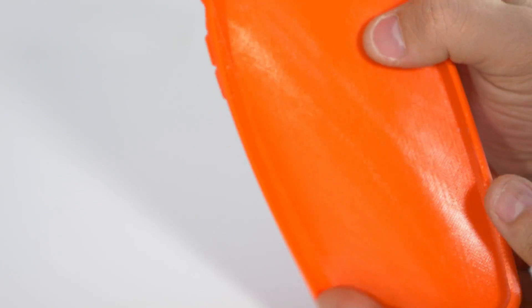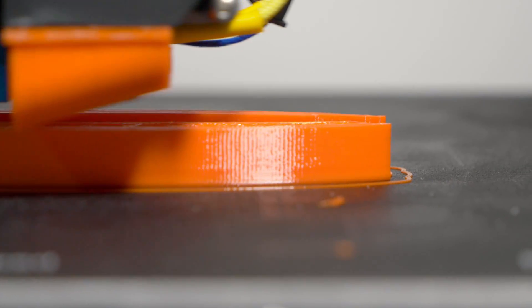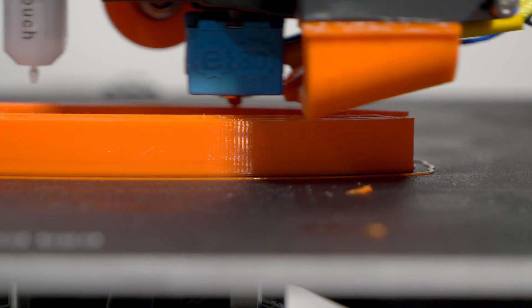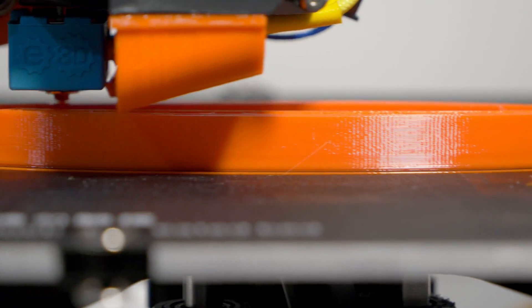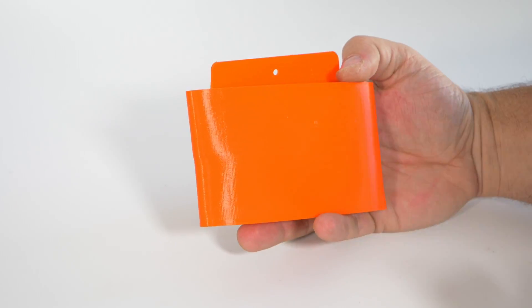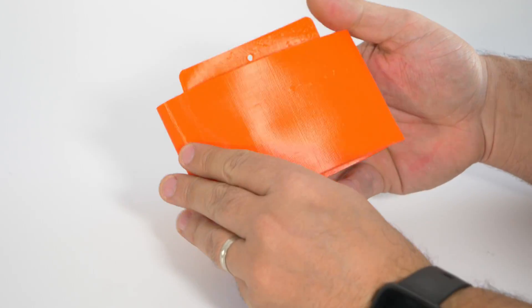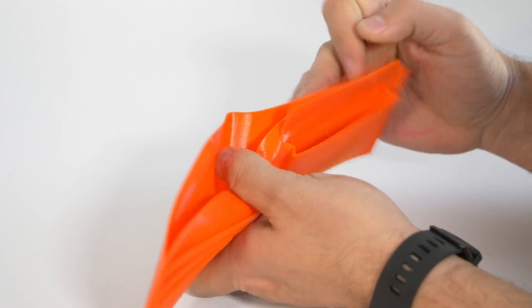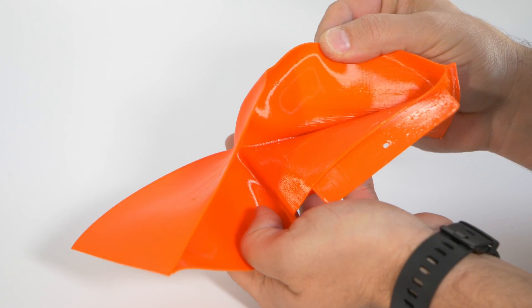But I went ahead and downloaded the wallet STL, I set the same parameters and started printing. Now this time however, bar a few tweaks to the slicing profile which was thrown together in a few seconds, the print turned out absolutely amazing. Not amazing in terms of best quality amazing, but ninja flex at 60 millimeters a second on an Ender 3 amazing.